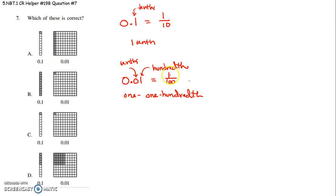So you want the picture that has 1 out of 100 boxes shaded. Well this one has 10 out of 100 shaded. That can't be it.